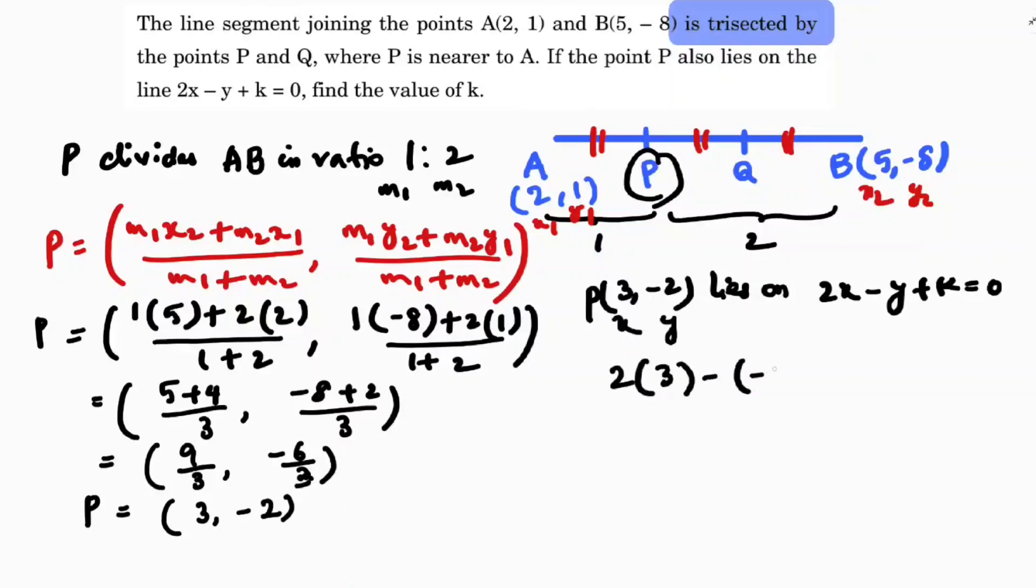Now 2 times 3 is 6, minus times minus is plus 2, plus k equals 0. So 8 plus k equals 0, which means k equals -8.